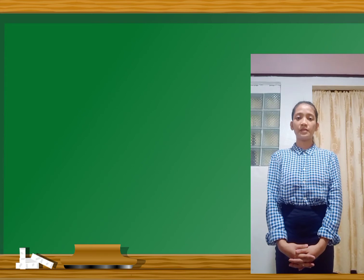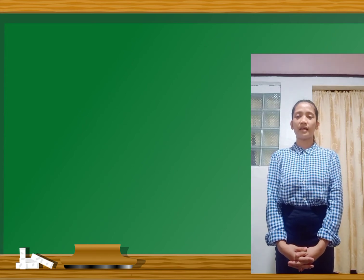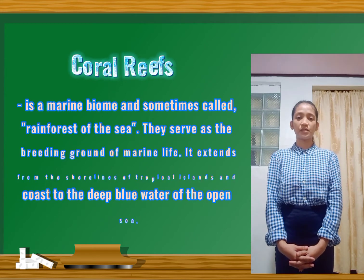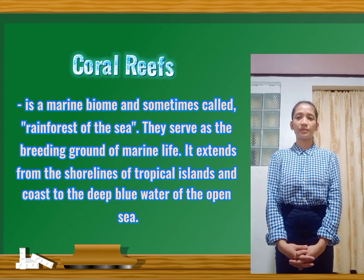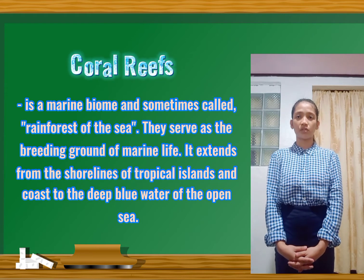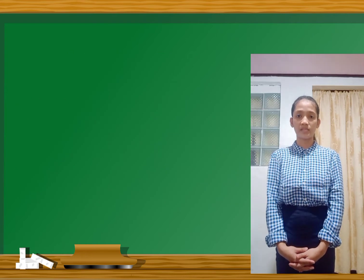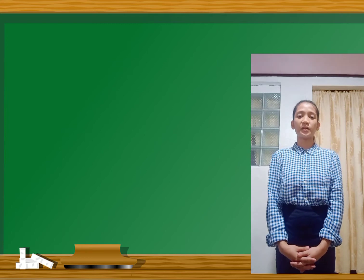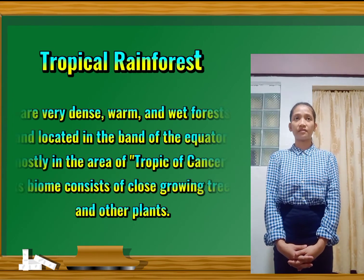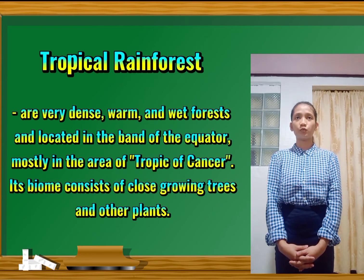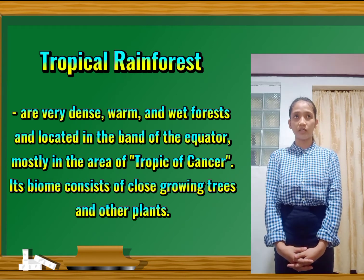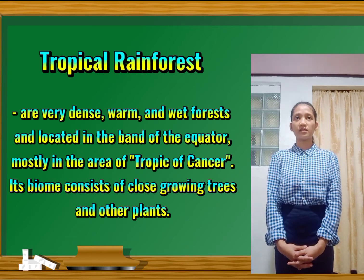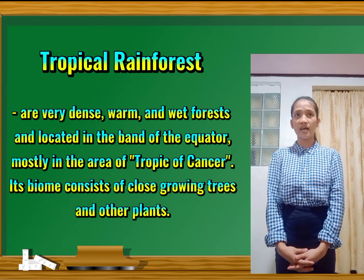What is a coral reef? Coral reefs are a marine biome, sometimes called the rainforest of marine life. They extend from the shorelines of tropical islands and coasts to the deep blue waters of the open sea. What is the tropical rainforest? Tropical rainforests are very dense, warm, and wet forests located in the band of the equator, mostly in the area of the Tropic of Cancer. Their biome consists of close-growing trees and other plants.